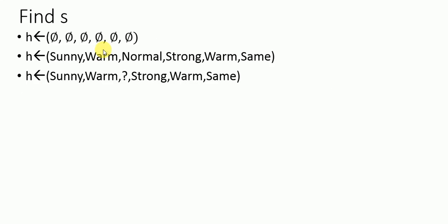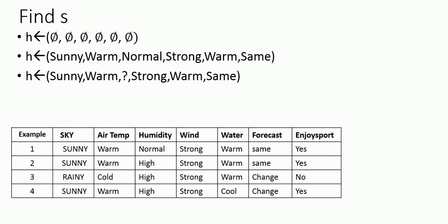The last instance is positive, but some constraints have changed. All previous values were 'warm' but this one is 'cool'; other attributes remain the same. Since the constraint has changed, we make those two attributes more generic.